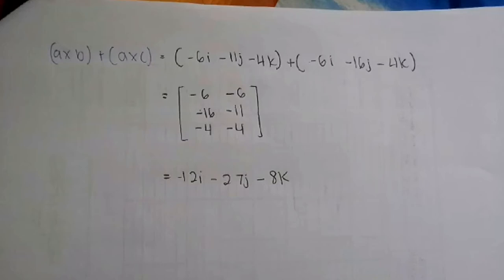Disesuatu cara matrix. Negatif 6, negatif 6, negatif 16, negatif 11, negatif 4, negatif 4. Dan jawapan akhir dia adalah negatif 12I, tolak 27J, tolak 8K.